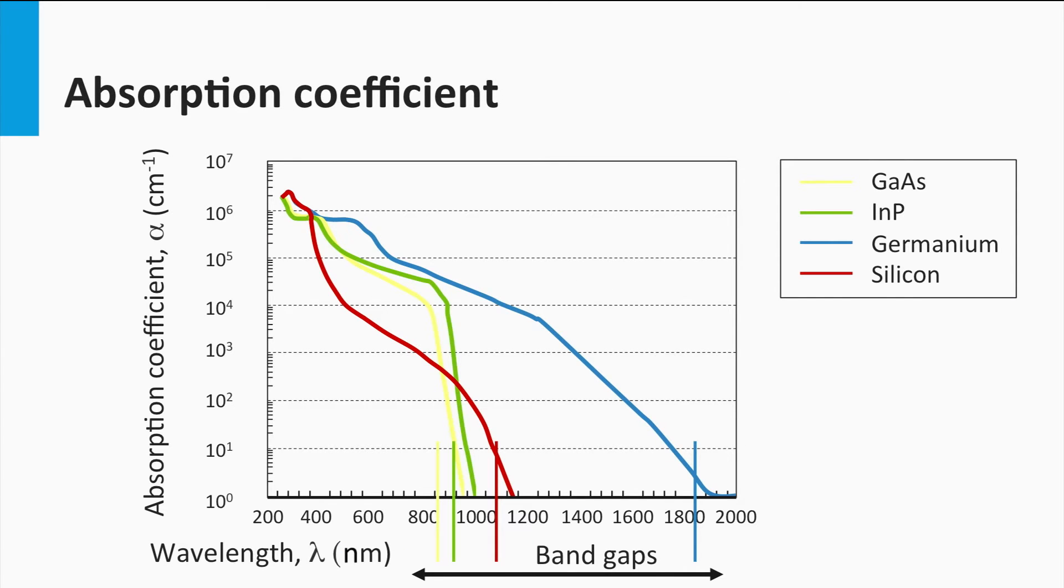In this figure, the absorption coefficients for four different semiconductor materials are plotted: Germanium, silicon, gallium arsenide and indium phosphide. First you see that germanium has the lowest band gap. Germanium starts to absorb at high wavelengths, which means low photon energy.